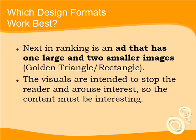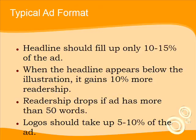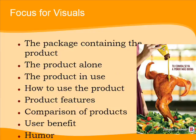Nixing ranking is an ad that has one large visual and two smaller images, such as the golden triangle or golden rectangle we talked about earlier. The visuals are intended to stop the reader and arouse interest, so the content must be interesting. Typically, the headline should fill up about 10-15% of the ad. When the headline appears below the illustration, it gains 10% more readership. Readership drops off if body copy has more than 50 words. Logos and related information typically take up 5-10% of the ad. The visual is usually the most important element. It may involve the package containing the product, the product alone, the product in use, how to use the product, product features, comparison of products, user benefit, or humor.